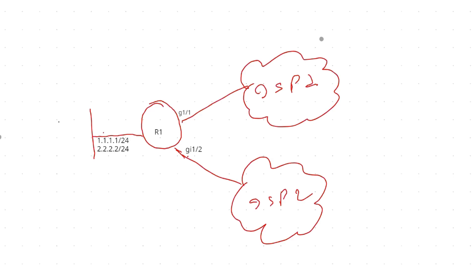In this network design, the requirement is to advertise two prefixes via two different ISPs. My LAN is advertising subnets 1.1.1.0/24 and 2.2.2.0/24. What I want is that 1.1.1.0 should be advertised via ISP1 and 2.2.2.0 via ISP2. In this case, both weight and local preference won't work — weight is local to the router and local preference applies to the entire AS without the ability to filter per prefix. This is a conditional advertisement scenario.